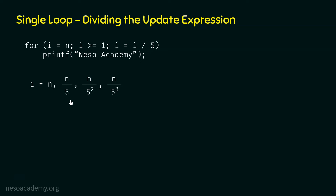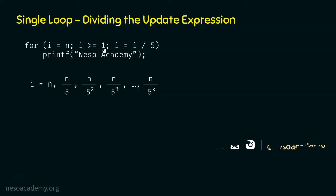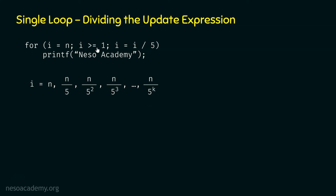We can observe the pattern here. The initial value of i is N divided by 5 to the power 0, or simply N. Then N by 5, then N by 5 squared, N by 5 cubed, continuing up to N by 5 to the power k. This is the last value of i for which the condition is satisfied. So I am assuming that N by 5 to the power k is equal to 1, and after this it becomes less than 1.